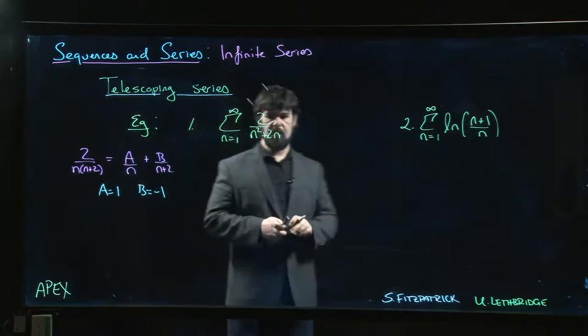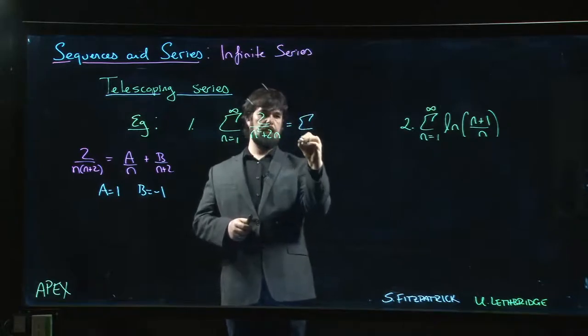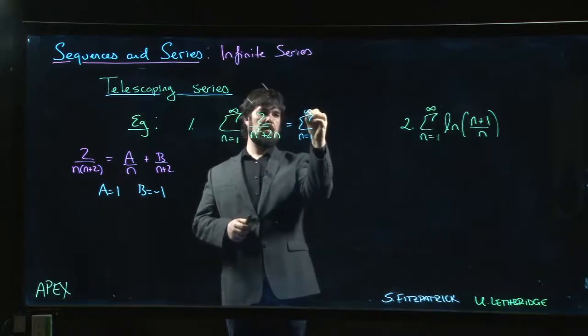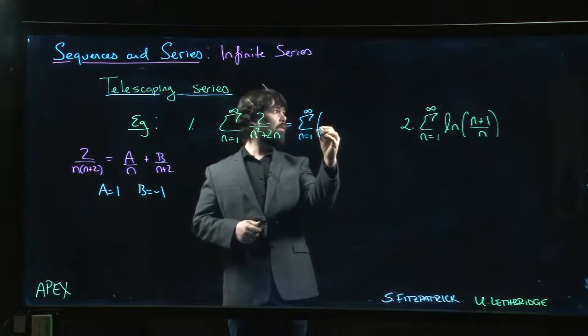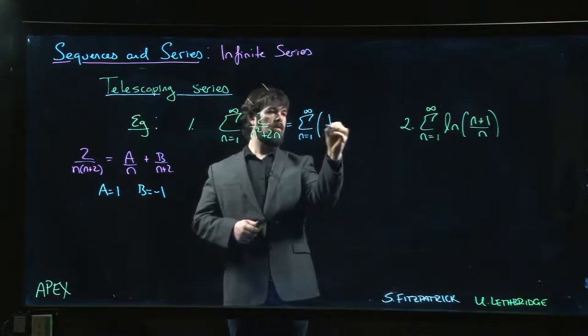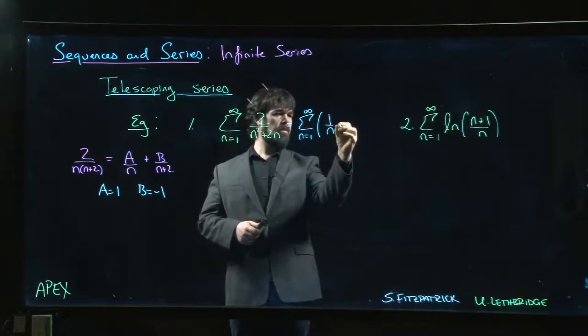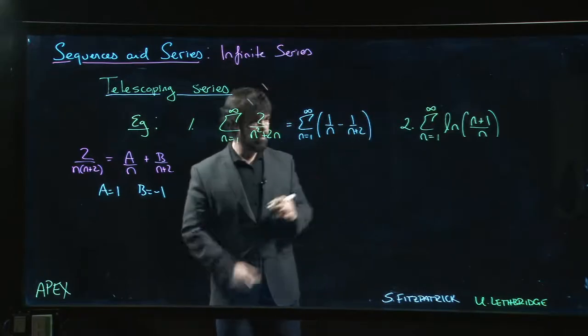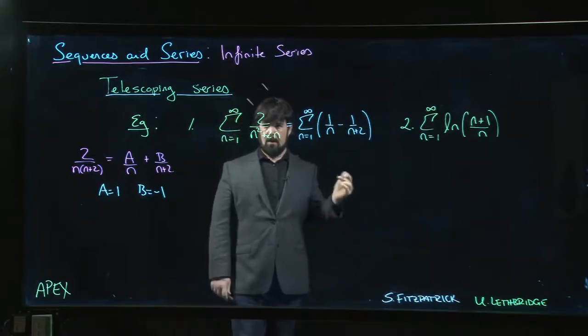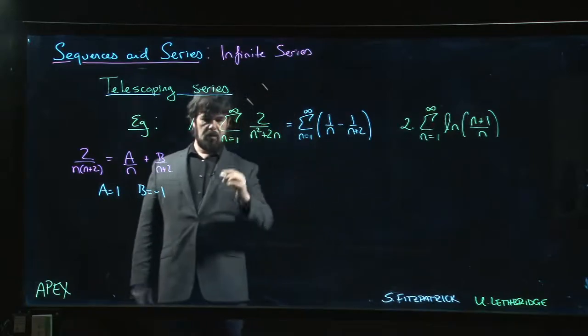So, we can rewrite this as the sum n going from 1 to infinity of, sorry, something fell off the light. Still working. Let's keep going. 1 over n minus 1 over n plus 2. Start writing out the partial sum. See if we can figure out what's going on.